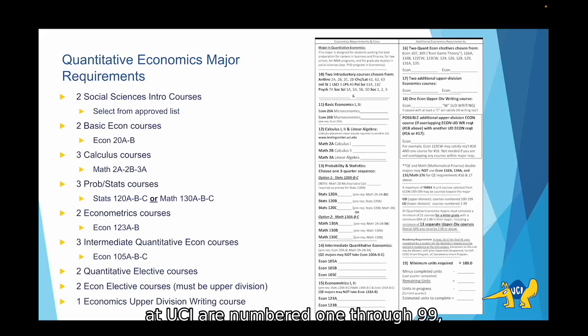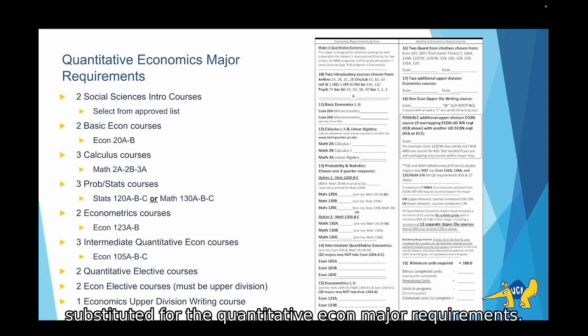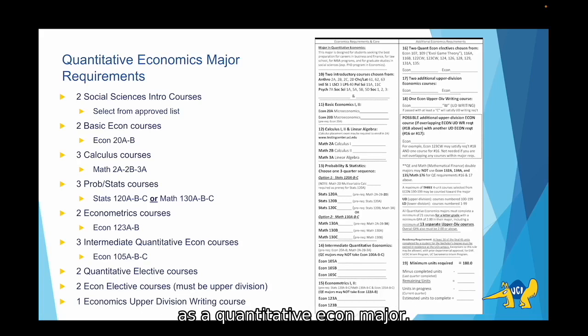As a reminder, lower division courses at UCI are numbered 1-99, while upper division courses are numbered 100-199. You can always ask an advisor about which classes you can take for certain requirements. One last thing that is extremely important for quantitative econ majors to know is that you must take the Econ 105abc series and the Econ 123ab series to remain as a quantitative economics major. So you might see some of your friends maybe who are econ majors or business econ majors taking the Econ 100 series or the Econ 122 series. These two series cannot be substituted for the quantitative econ major requirements. So it is essential to keep this in mind when looking at classes to ensure that you enroll in the proper ones as a quantitative econ major. If you happen to take the other courses, you will not be able to continue in the quantitative economics major.